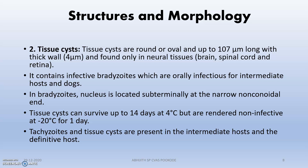The next stage is the tissue cyst. Tissue cysts are round or oval and contain infective bradyzoites, which are orally infectious for the intermediate host and also in the case of dogs. This is an important point to remember.